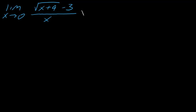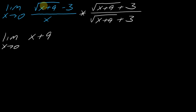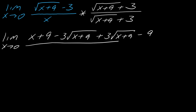The conjugate is found by taking the square root expression — here, square root of (x plus 9) — and changing the sign between the square root and the other number. Since we have a negative, we make it positive. You don't want to multiply out the bottom; leave it and just foil out the top. The square root of (x plus 9) times itself gives x plus 9, and after the middle terms cancel and the 9's drop out, you're left with just x on top.